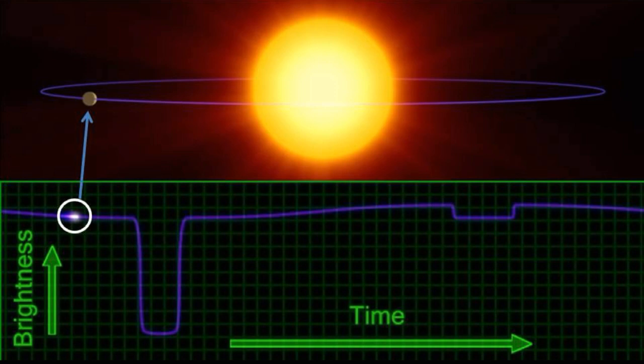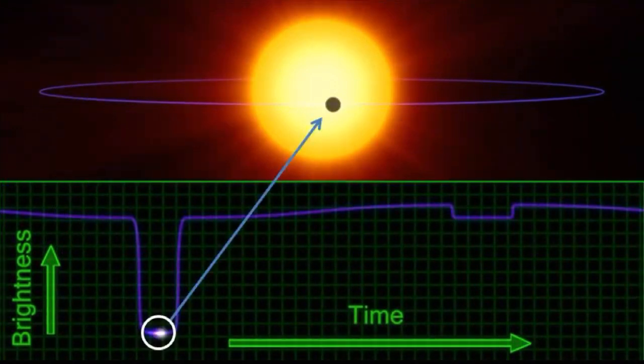We circled a point on the graph in white that corresponds to the planet's position coming around from behind the star. This second position shows the planet eclipsing the star. Notice the flux curve drops to form a steep U-shaped curve.